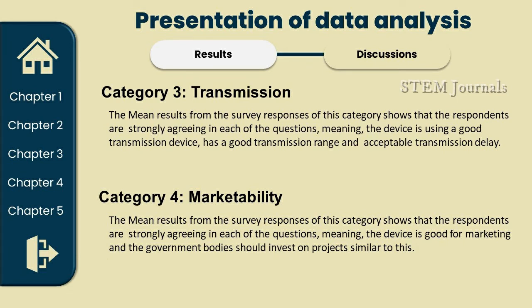For Category 3: Transmission. The main results from the survey responses show that respondents are strongly agreeing on each question, meaning the device uses a good transmission device, has a good transmission range, and acceptable transmission delay. Category 3 shows that the transmission of our NotiFlood device has a good transmitter to transmit signal within its given maximum range of 5 meters.